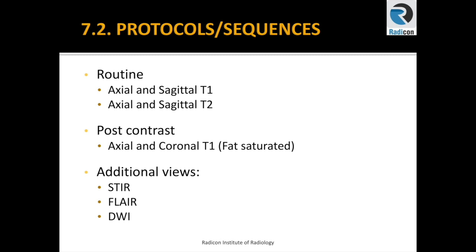If you are dealing with a claustrophobic patient or someone who cannot tolerate MRI well due to pain, you can drop the axial T1 images, as they are not always required. Some centers routinely perform just three sequences: two sagittals and one axial T2.